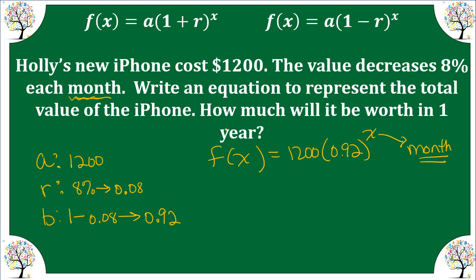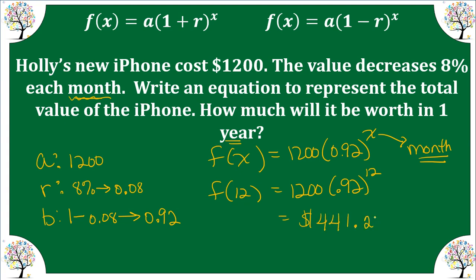They want to know how much the phone will be worth in one year. We must convert years to months — one year equals 12 months. So we have 0.92 raised to the 12th times 1,200. The phone is now worth $441.20. Make sure in your word problem that when you plug in a value, it has to match the same unit of time as the rate.